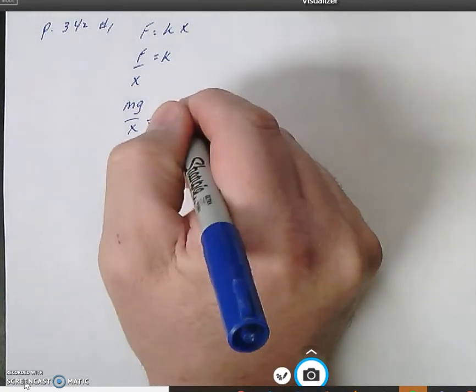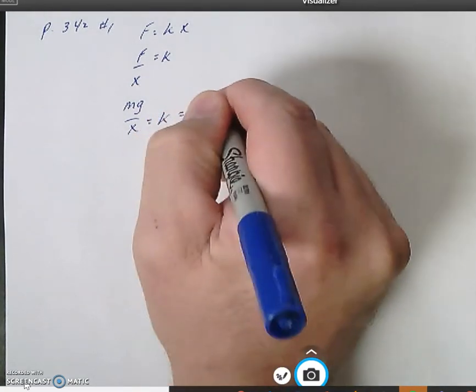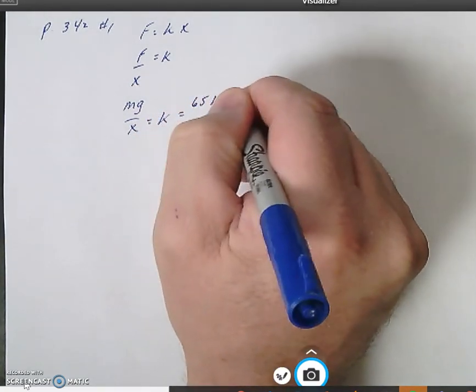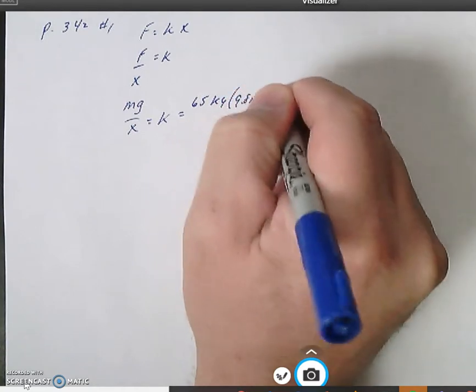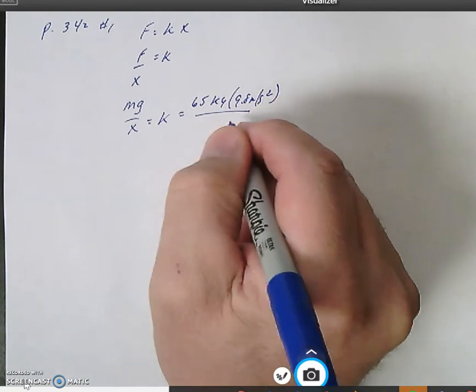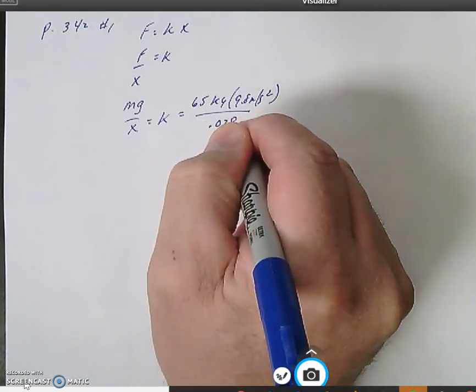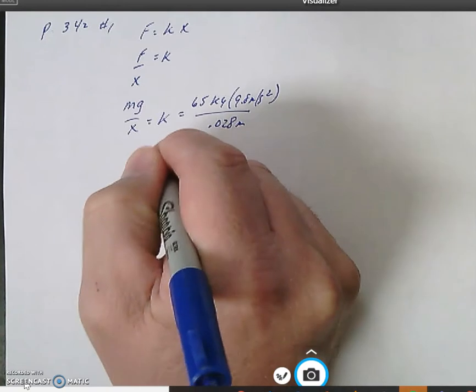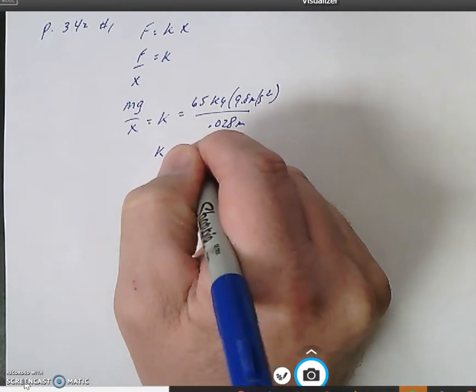So if we substitute in 65 kilograms times 9.8 meters per second squared and divide that by the amount of compression of the spring, which is 2.8 centimeters or 0.028 meters, our k value becomes 2.28 times 10 to the 4 newtons per meter.